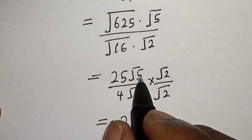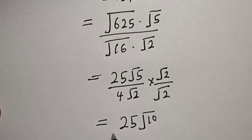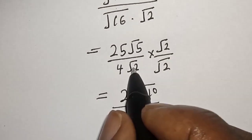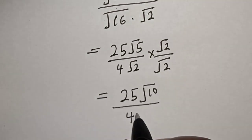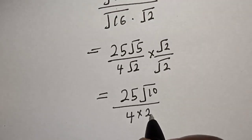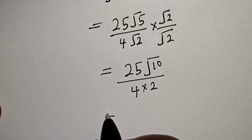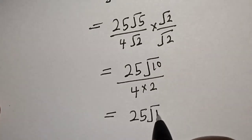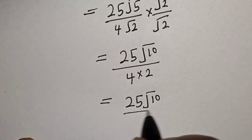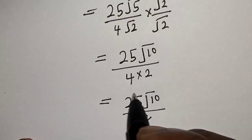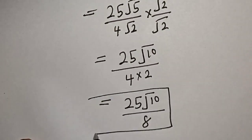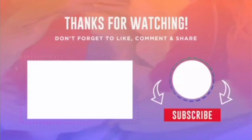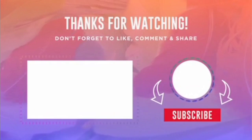Multiplying by root 2 over root 2 gives us 25 times root 5 times root 2, which is 25 root 10, over 4 times 2, which is 8. So the final answer is 25 root 10 over 8. If you enjoyed the class, please don't forget to like, share, comment, and subscribe. Thank you.